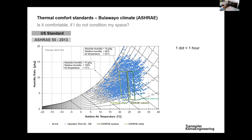According to ASHRAE, in Bulawayo you have to do something. At some parts of the year — winter — you need to heat. At summer peaks, you need to cool or increase air movement to achieve comfort. Sometimes you are also too humid, above 12 grams of water per kilogram of air, so you need to dehumidify. The conclusion: if you do not condition your space, you are not comfortable according to the ASHRAE standard. It doesn't mean it's always terrible, but the standard is not achieved.